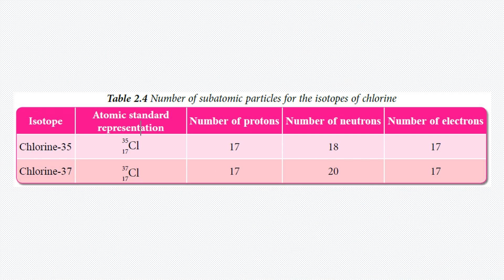Let's see the difference in subatomic particles of the isotope. This is an example of isotopes of chlorine. As you can see, we have chlorine-35 and chlorine-37. The numbers 35 and 37 are the nucleon numbers. In the standard representation, 35 and 17 — 17 is the proton number. The difference is the nucleon number.